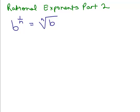This is part 2 of rational exponents. In part 1, we used this definition: b to the 1 over n equals the nth root of b. For instance, 8 to the 1/3 simply means the cube root of 8, which is 2. So I could write anything with a rational exponent where there's a 1 in the numerator as the something root — in this case, whatever the denominator is. So I could write it using a radical.